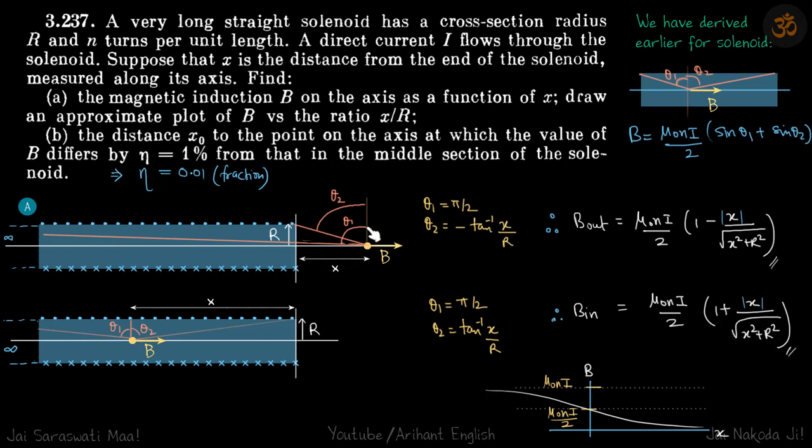Tan inverse x by r. This is theta 2. This distance is x and this is r. Tan of theta 2 is x by r but we have to take a minus sign.